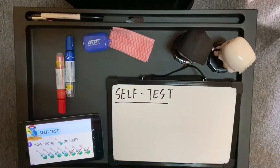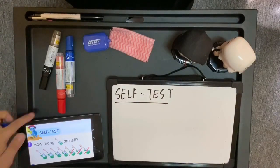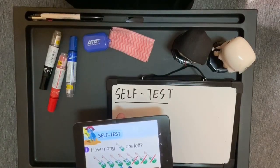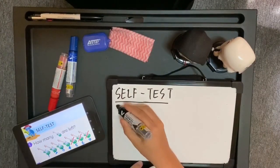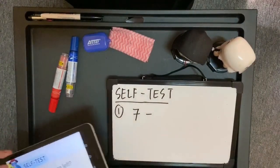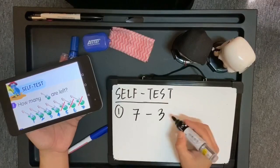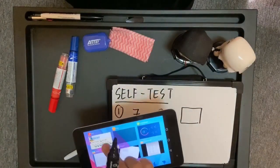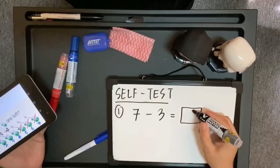Untuk self test yang pertama: How many guitar are left? Boleh rujuk dekat gambar. Berapakah yang tinggal? Ada 1, 2, 3, 4, 5, 6, 7. Jadi, ayat matematik. Soalan yang pertama ni: 7 tolak berapa? Tengok balik gambar — ada 1, 2, 3 yang telah dipotong. Jadi, 7 akan tolak 3. Berapa yang tinggal? Masih lagi yang elok ada? 1, 2, 3, 4. Jadi, 7 tolak 3 sama dengan 4.